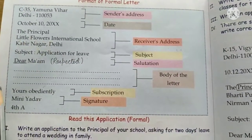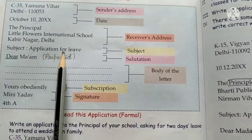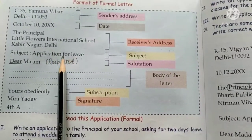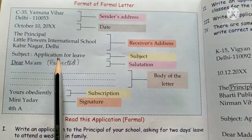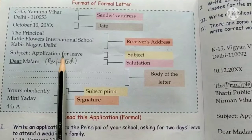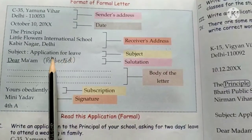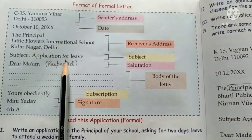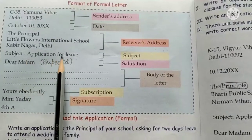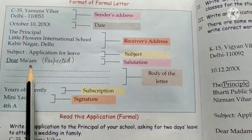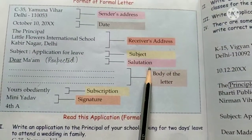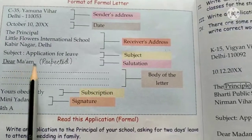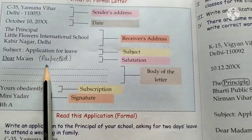After the receiver's address, we write the subject — that is, why we are writing the letter, the reason for writing to the receiver. It can be a leave application, written as 'Application for Leave,' or a request to change the section, or any other cause. It has to be stated properly and clearly in the subject line.